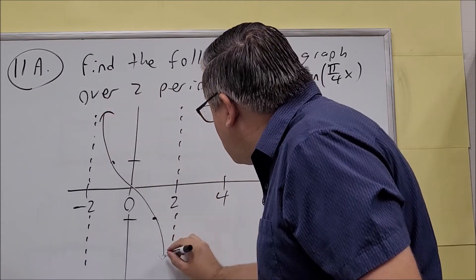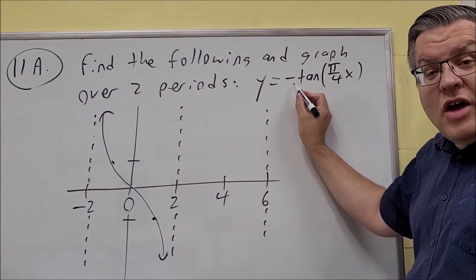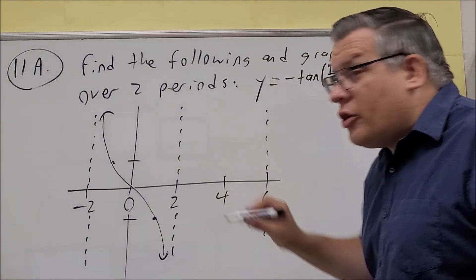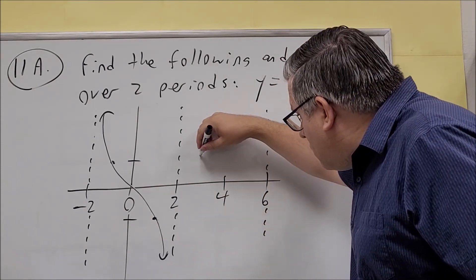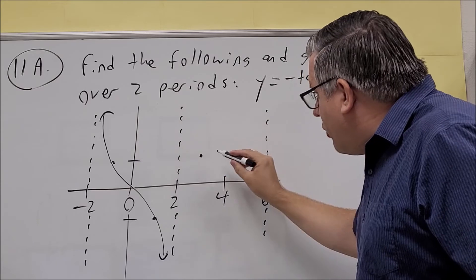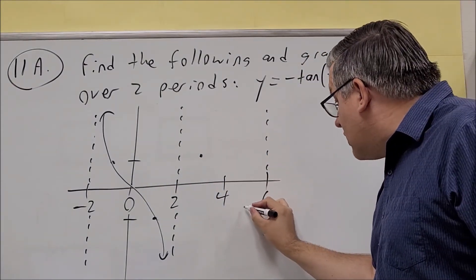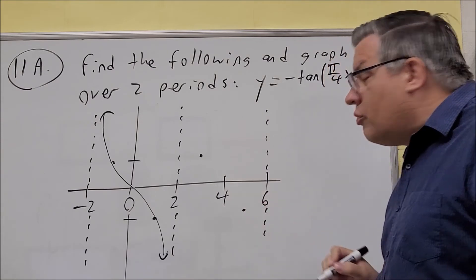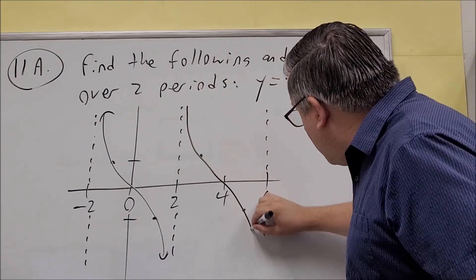Again, the reason it's going in this direction is the negative sign out front. Normally it would go the other direction. Between 2 and 4, the graph hits 1 up here, and between 4 and 6, it hits 1 down below. So this portion looks like this.